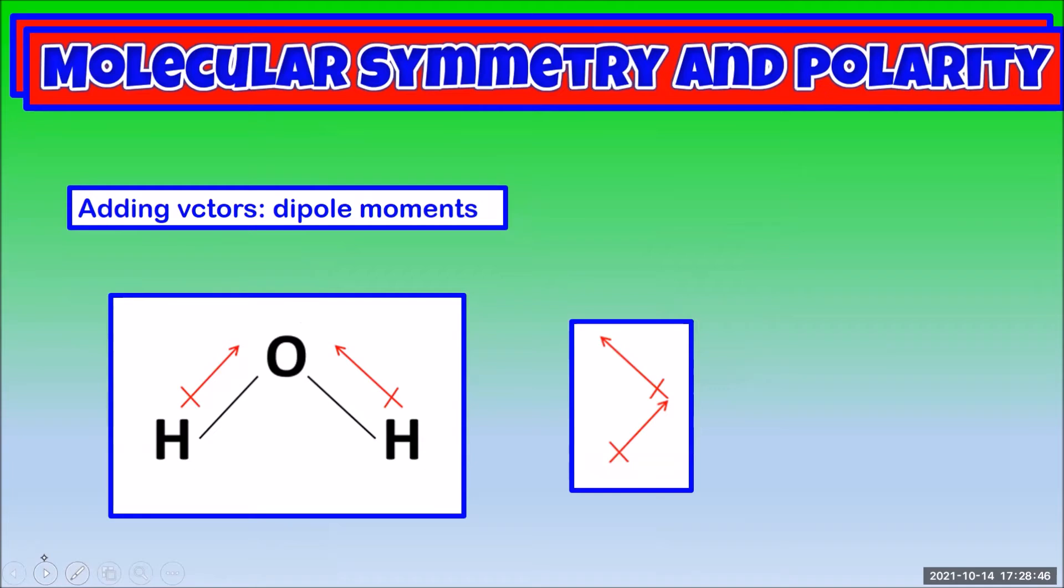Let's draw the resultant vector, the sum of the two vectors, that is the overall effect of those two polar bonds together.